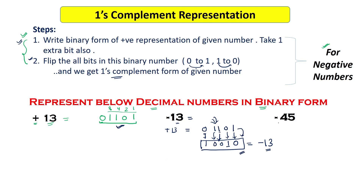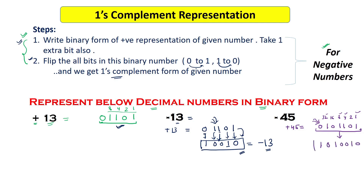Let's take another example with minus 45. First, represent +45 in binary: 45 is 101101, with weights 1, 2, 4, 8, 16, 32 — so 32 + 8 = 40, 40 + 4 = 44, plus 1 = 45. Adding the sign bit 0, +45 is 0101101. Now invert all bits to get the one's complement of minus 45: 1010010.